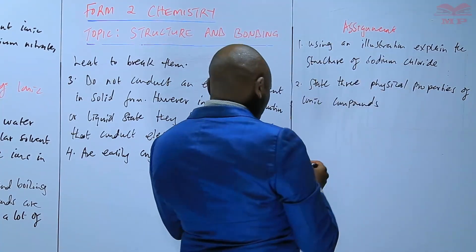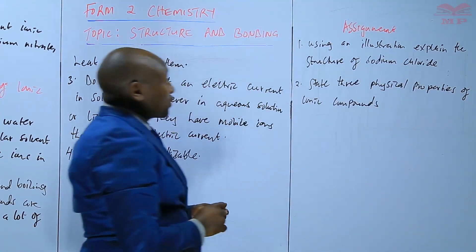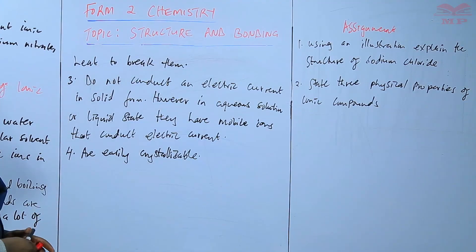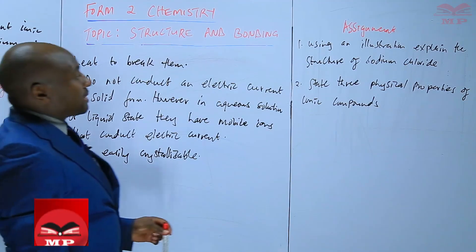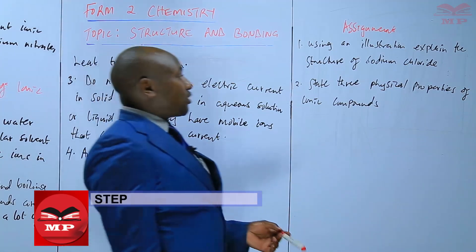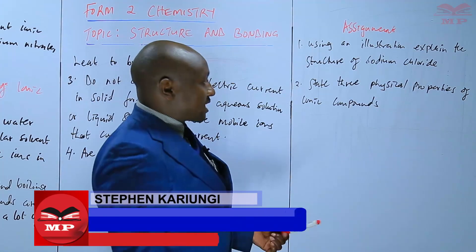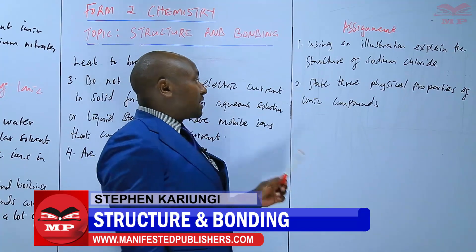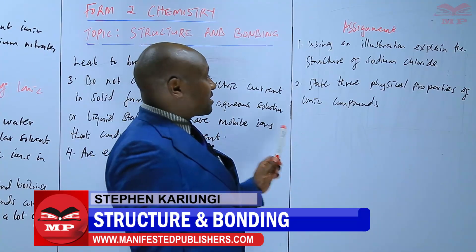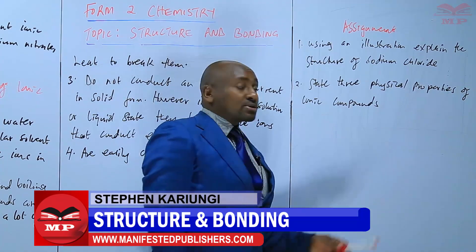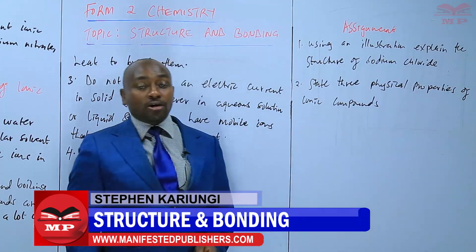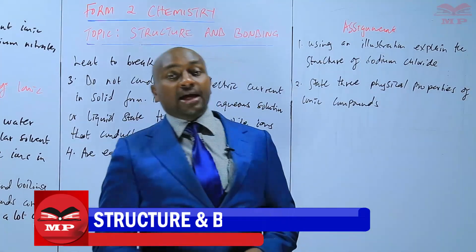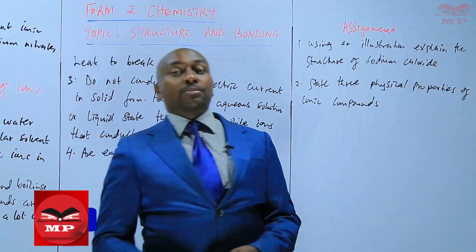So the first question: using an illustration, explain the structure of sodium chloride. Number two: state three physical properties of ionic compounds. We will stop there until next time. Goodbye.